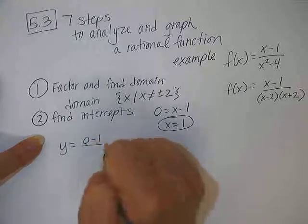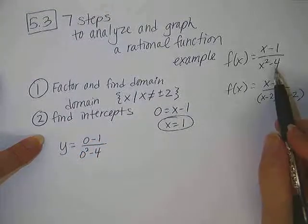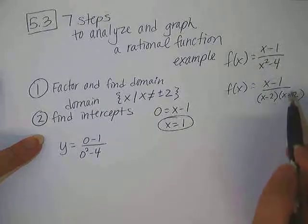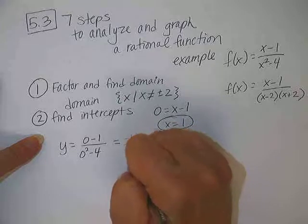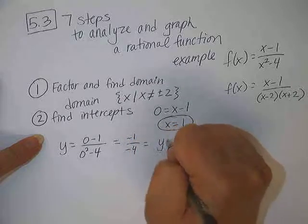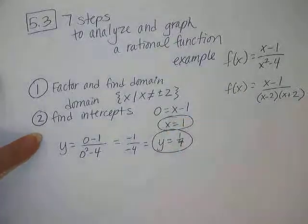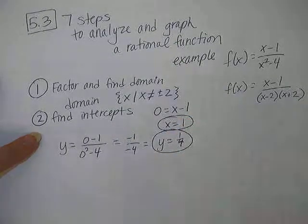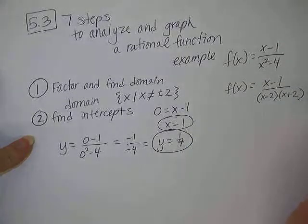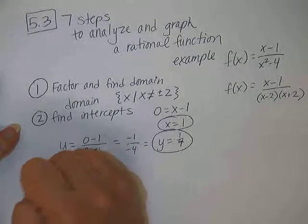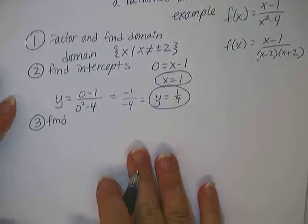The y-intercept, we take zero and plug it in for every x value. So 0 minus 1 over 0 squared minus 4. You can either do it by plugging zero into the original problem or into the factored problem. It does not matter. So we end up with negative 1 over negative 4, which is really y equals 1 fourth. So there's our intercepts. An x-intercept at positive 1 and a y-intercept at positive 1 fourth.